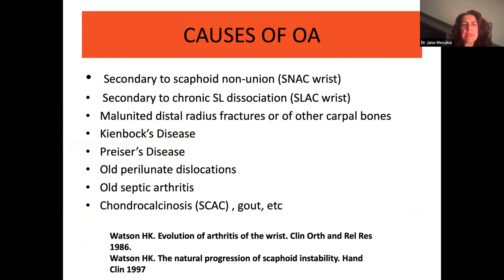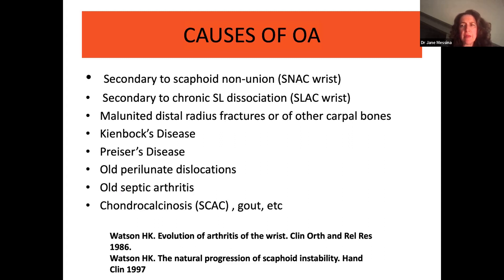The causes of wrist osteoarthritis, as you know, can be secondary to scaphoid nonunion in SNAC wrist, secondary to chronic scapholunate dissociation in SLAC wrist, malunited distal radius or other carpal bone fracture, Kienbock disease, Preiser disease, perilunate dislocation, septic arthritis, chondrocalcinosis, gout, and others.